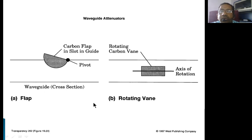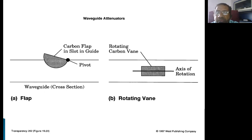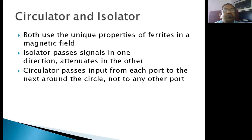Using these two — the carbon flap and the rotating carbon vane — we obtain the desired attenuation. We insert the carbon vane into the rectangular waveguide to provide the attenuation. The attenuator is a very simple circuit: using a simple concept, a percentage of EM waves are absorbed based on the required amount of attenuation.